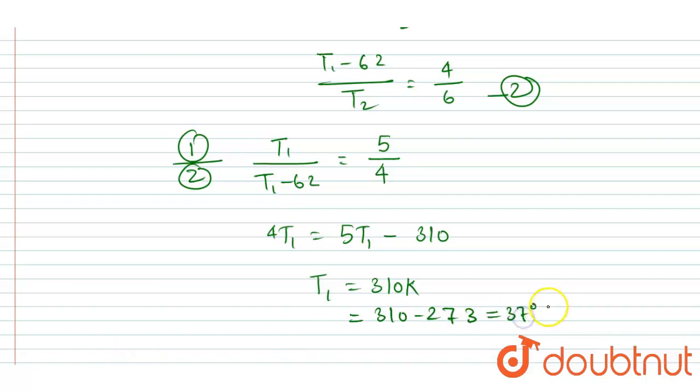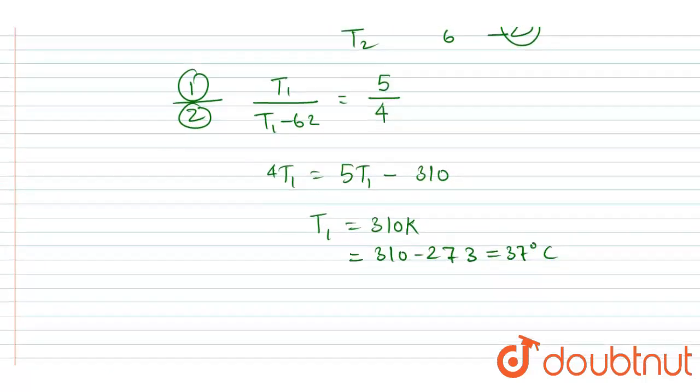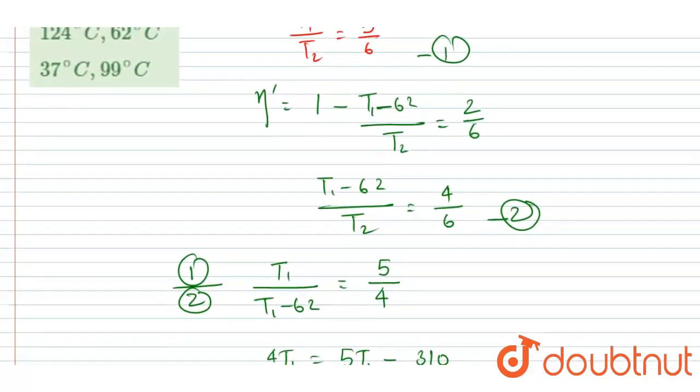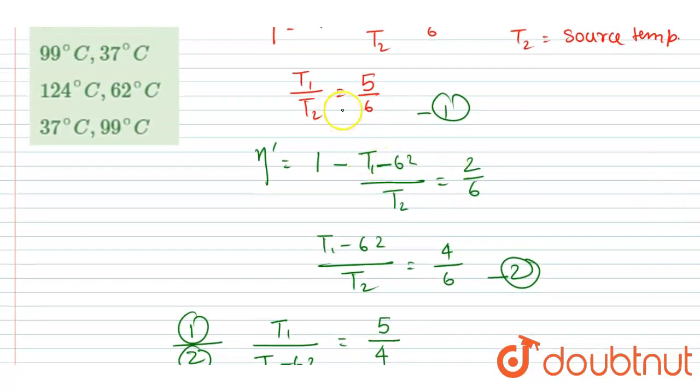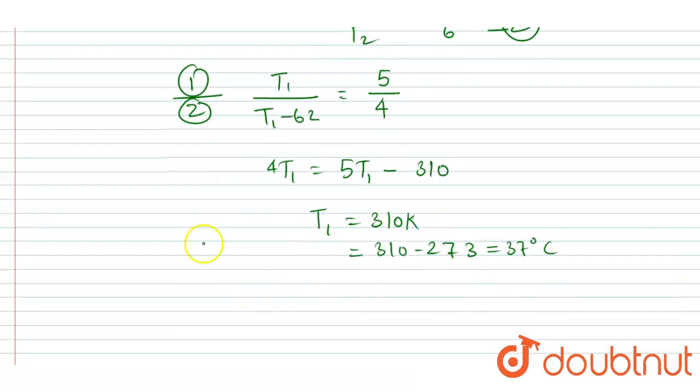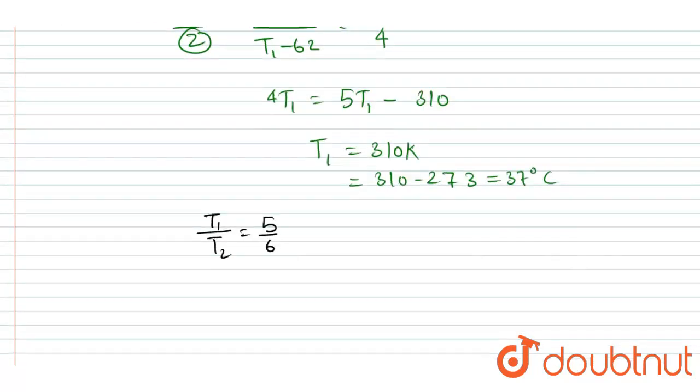37 degree Celsius. Now you can put the value of T₁ into equation 1 or equation 2, any equation. In equation 1, it is given that T₁/T₂ is 5/6, so I will write here T₁